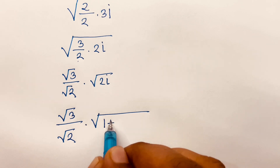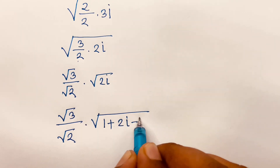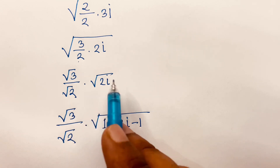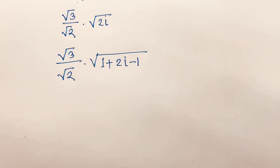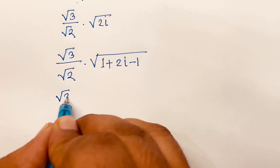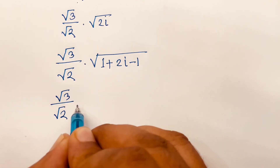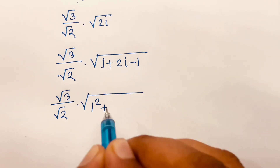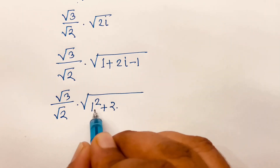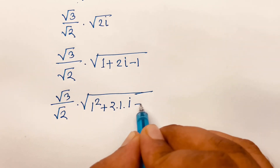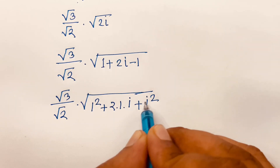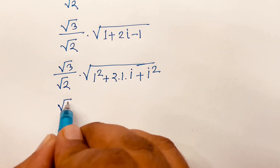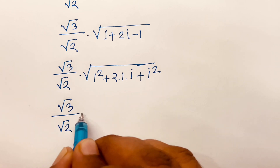It will be 1 plus 2i minus 1. Here 1 minus 1 equals 0, and again we will find out 2i. Then it will be square root 3 over square root 2 times square root of 1 squared plus 2 times 1 times i plus i squared. Now i squared equals minus 1.